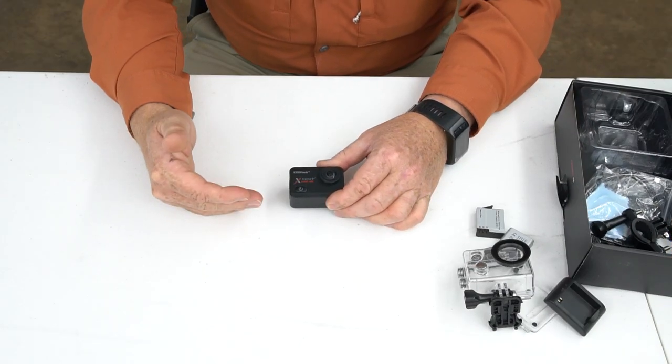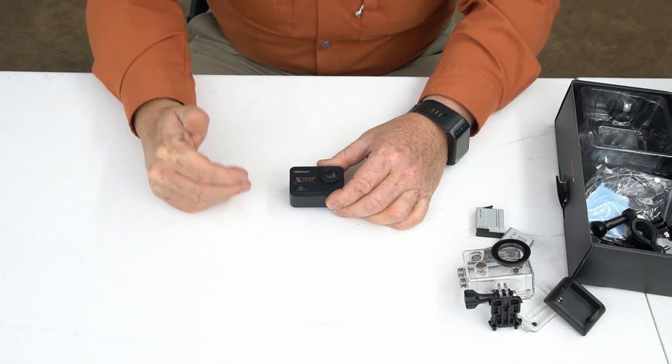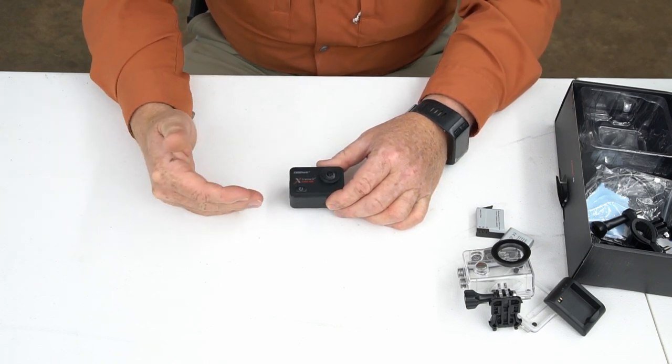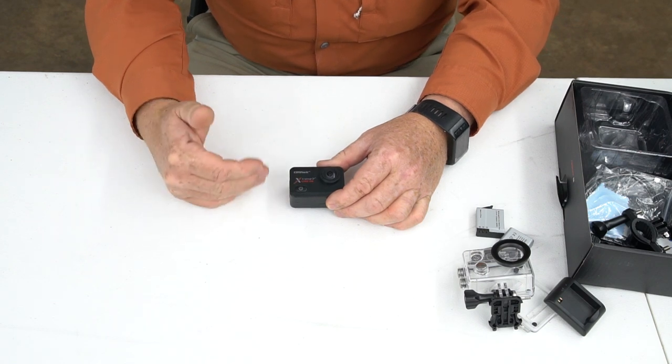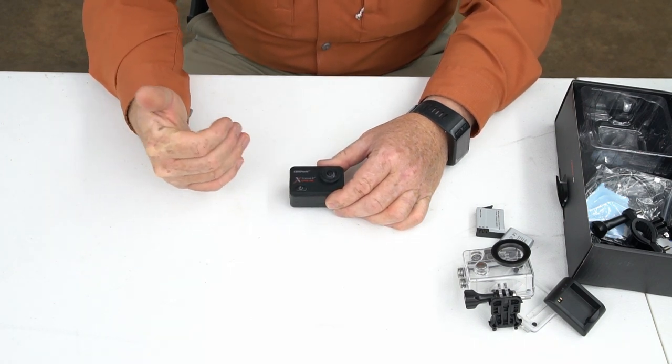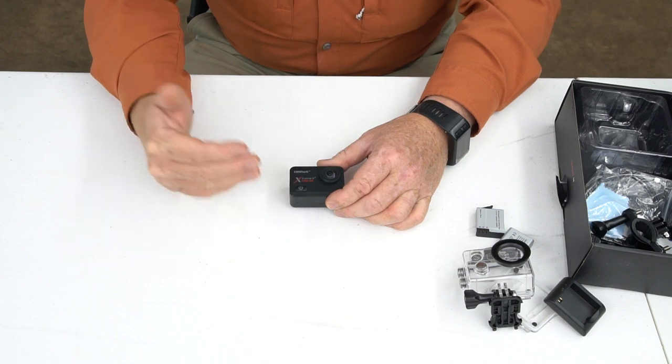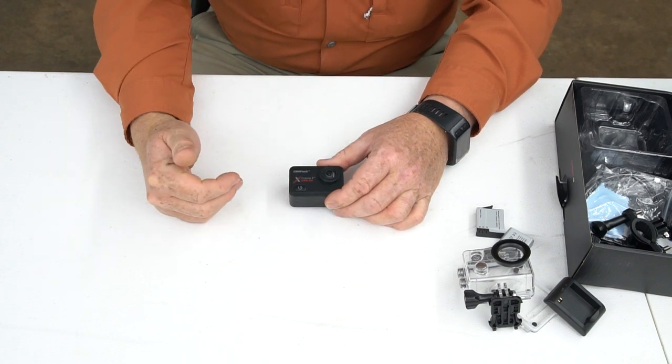So that clip right there shows just how sensitive the microphone is on this camera. I mean, you could hear my footsteps. You could hear the movements that I was making with the camera. Everything. And the wind in the background. Now, this camera has a super sensitive microphone. And that can be really good in a lot of cases.